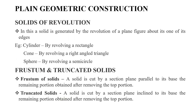Next is the topic of solids of revolution. A solid is generated by the revolution of a plane figure about an axis in the same plane as that figure. For example, revolving a rectangle generates a cylinder, and revolving a triangle generates a cone. Revolving a semicircle generates a sphere.